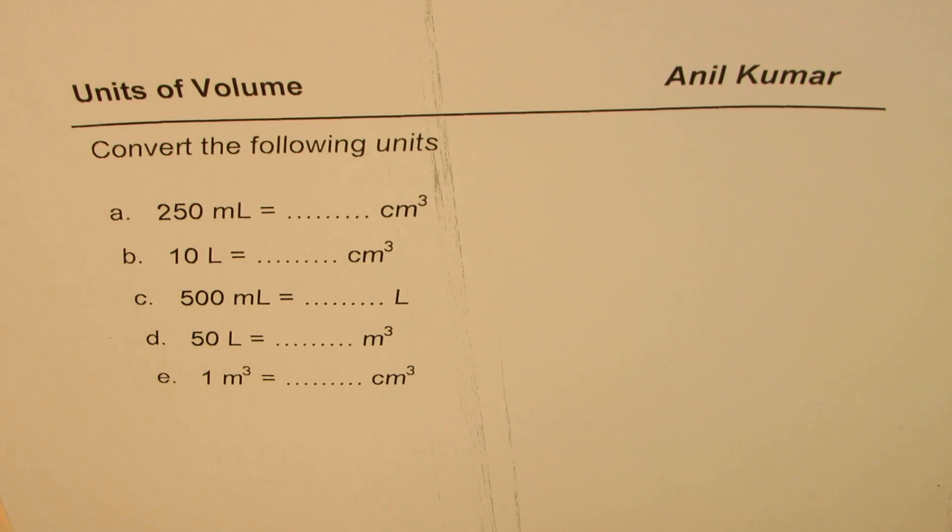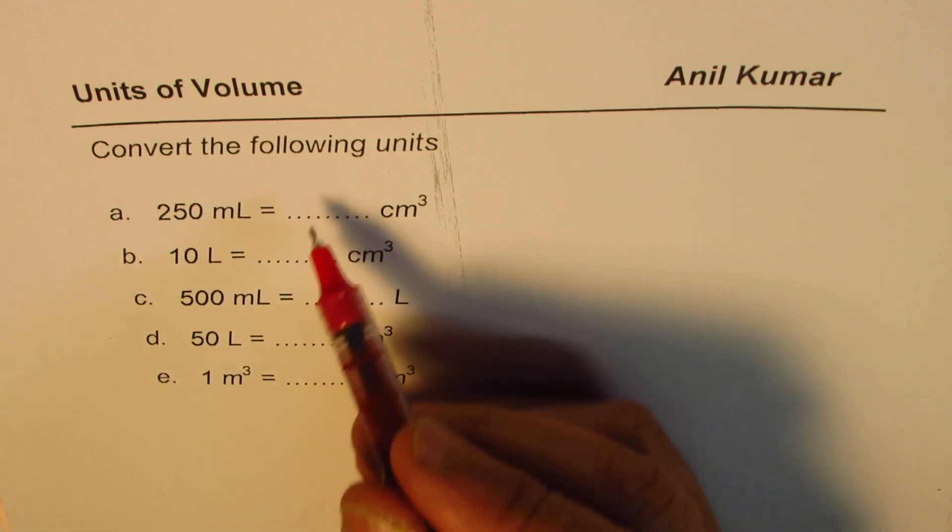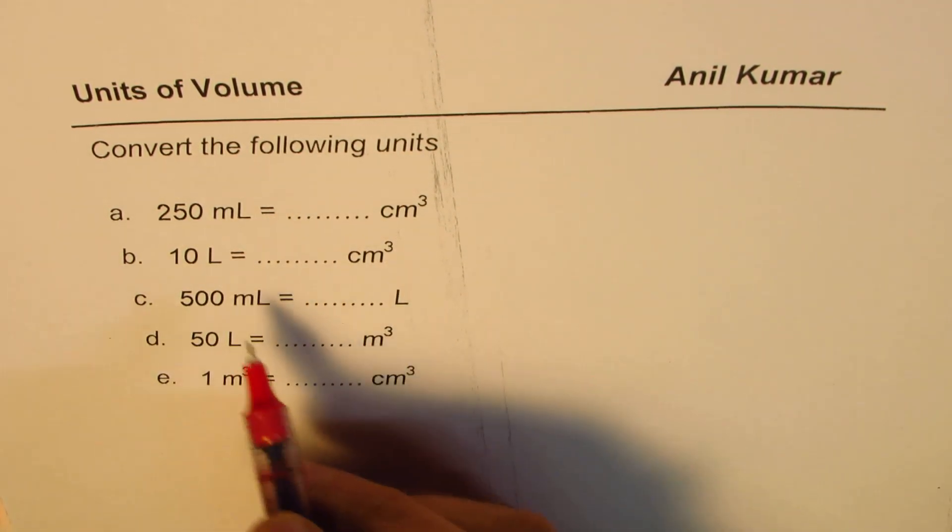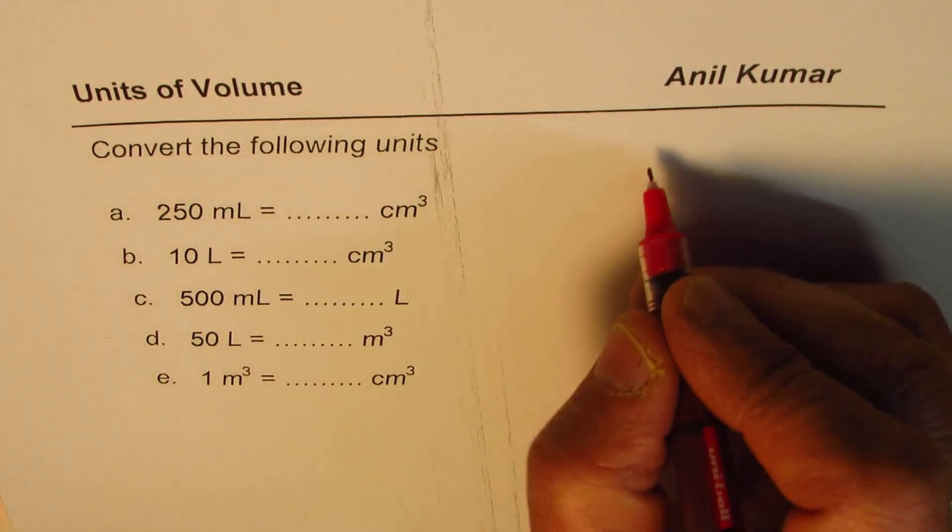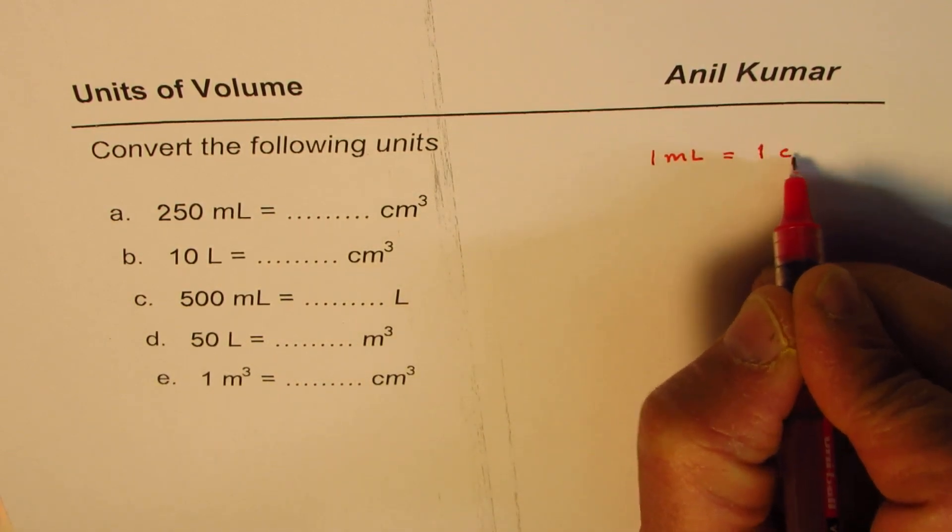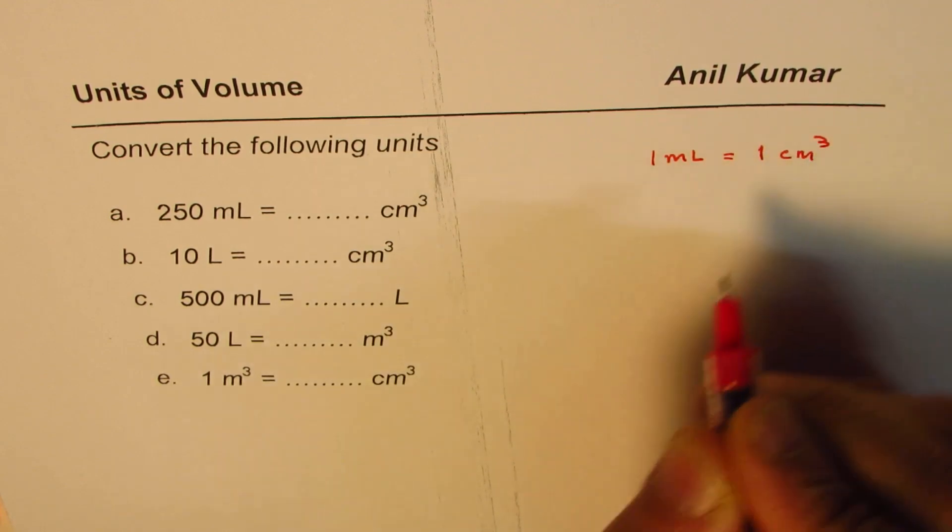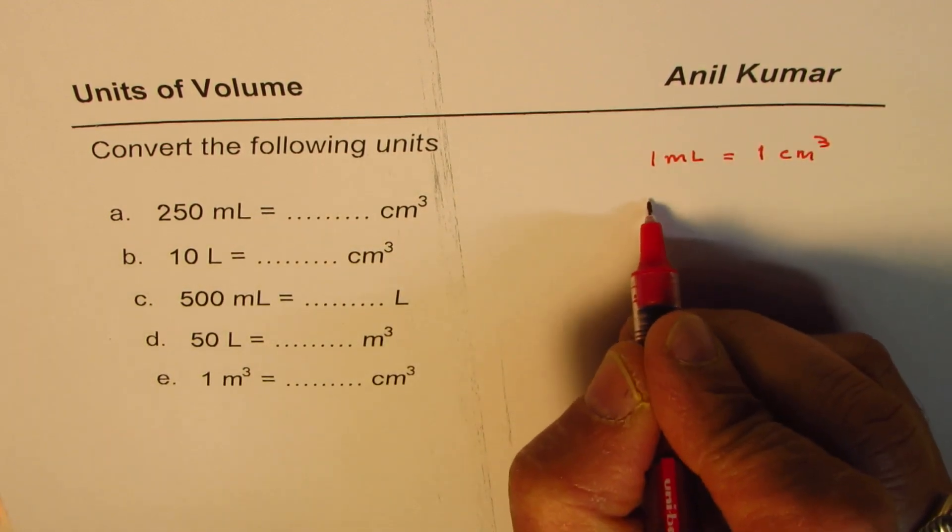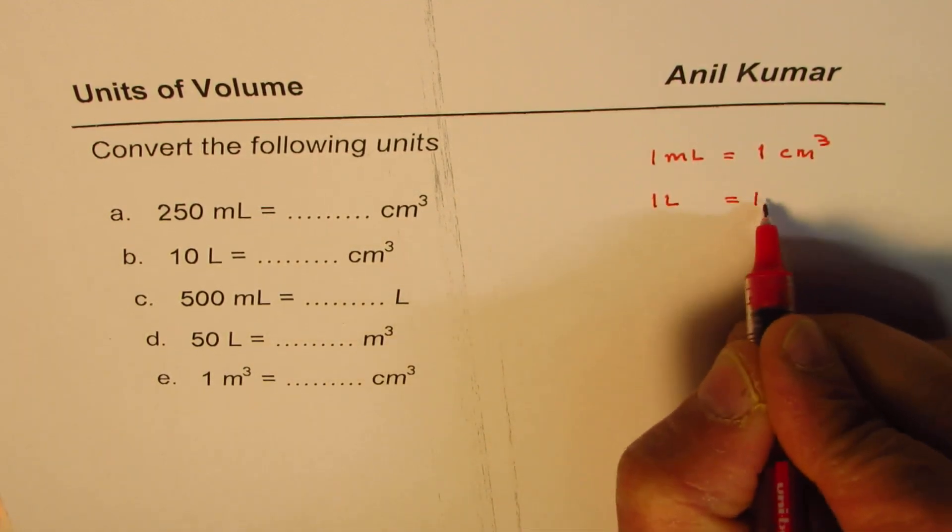You can pause the video, answer the question, and then look into my suggestions. Now before writing the answers, let me tell you the conversion of the units. One milliliter is actually equals to one centimeter cubed.